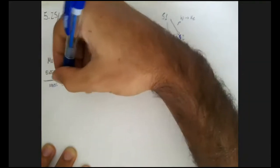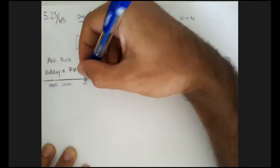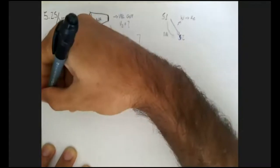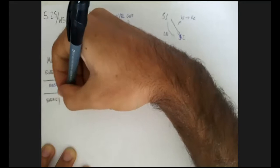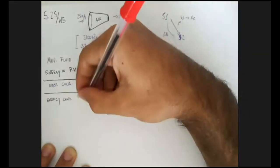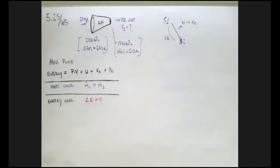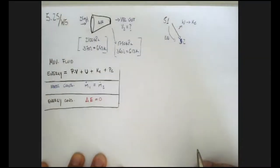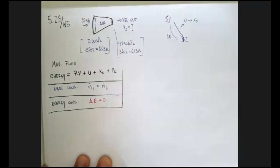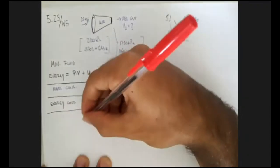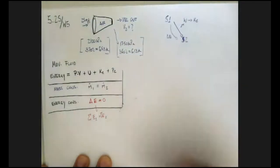We're going to use our mass conservation principle, which states that the mass flow rate at state one has to equal the mass flow rate at state two. And last but not least, we're going to use our energy conservation principle, which states that the change in energy has to be zero — in other words, you can't create or destroy energy.